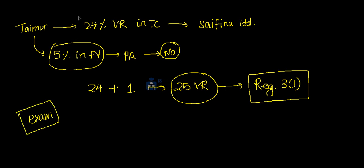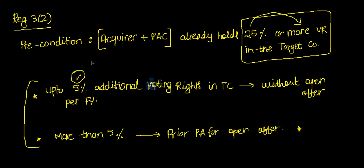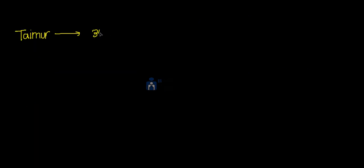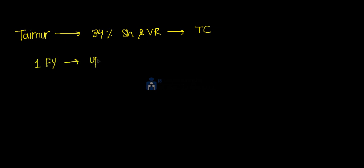This was an exam question: the acquirer has 24% shares and he acquired 3% more shares and he did not give an open offer, stating that he can acquire up to 5% in a financial year. Be very careful — to acquire 5% in a financial year, the pre-holding should be 25% or more voting rights in the target company. Only then can you acquire without giving the open offer. So if Taimur had 34% shares and voting rights in the target company, then for one financial year he can acquire up to 5% without attracting the obligation to make an open offer.